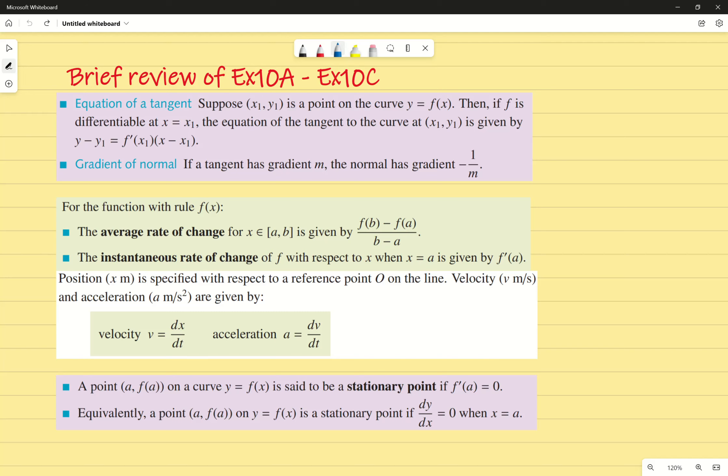You already know the gradient of a normal. Technically speaking, it's m1 times m2 equals negative one. In other words, you can use this equation right here to determine the second gradient.